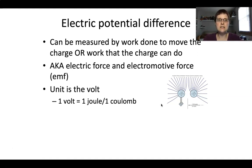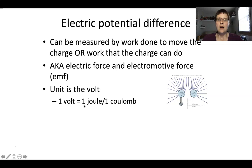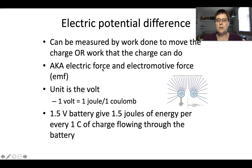The unit for electric potential difference is volts, which most people are familiar with from batteries. One volt is equal to one joule per one coulomb — joules are a measurement of energy. So a 1.5 volt battery, like a double-A battery, gives you 1.5 joules of energy per every coulomb of charge flowing through the battery — meaning for every 6.24 times 10 to the 18 electrons that flow through, you get 1.5 joules of energy to run whatever that battery is powering.